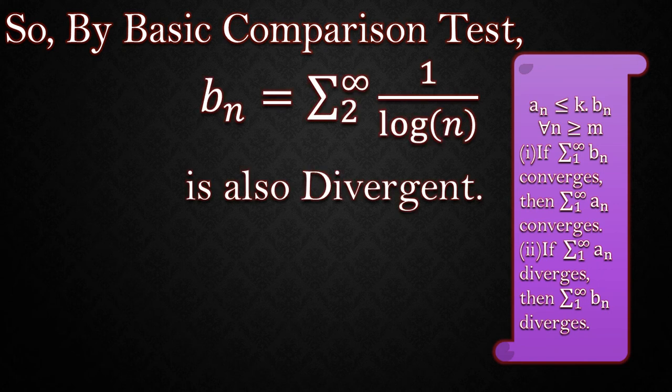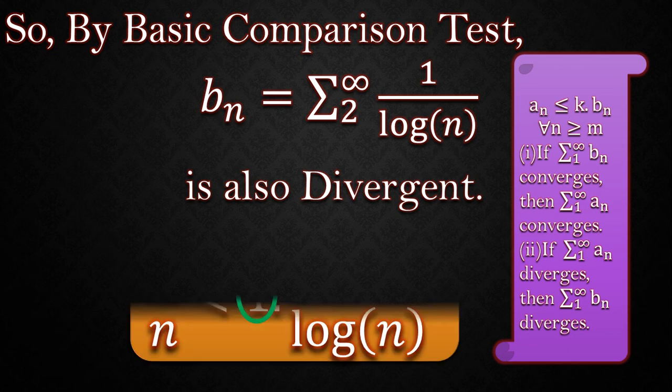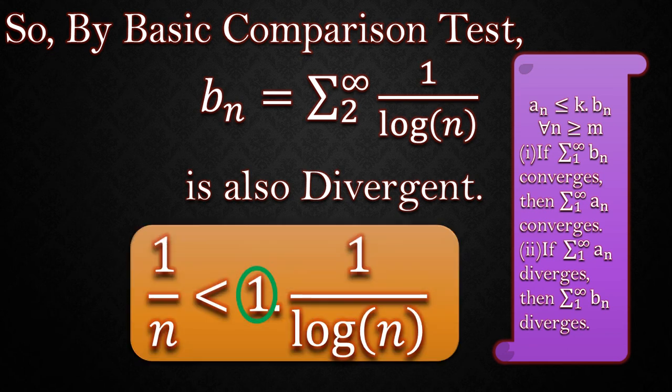1 by log of n is also divergent. If you are wondering what is k here, so k is equal to 1 in this case.